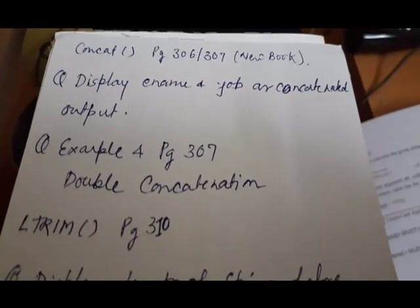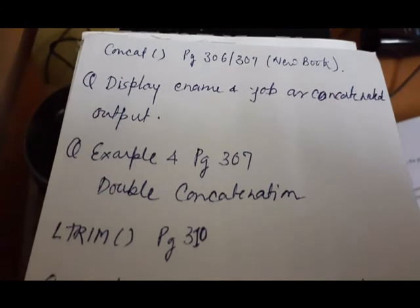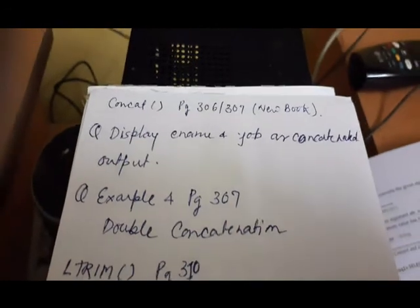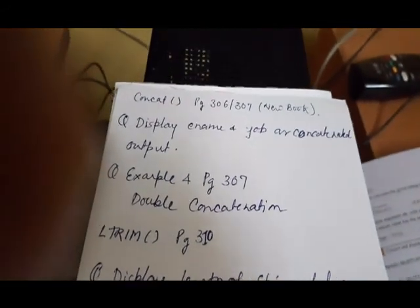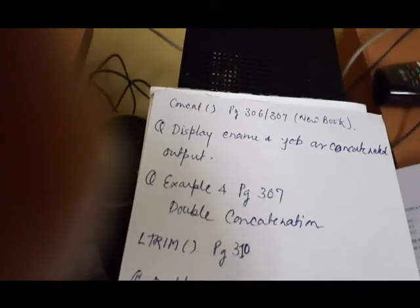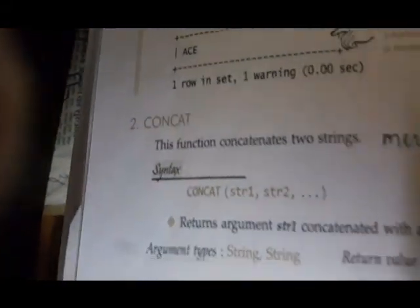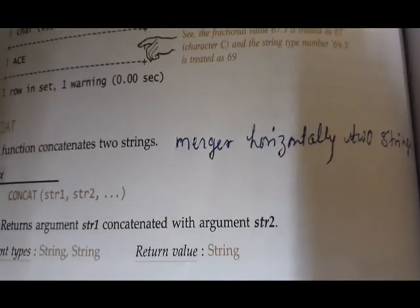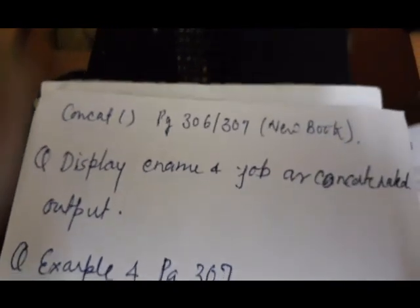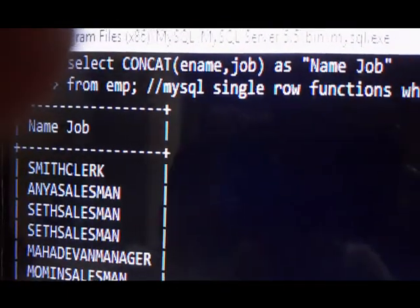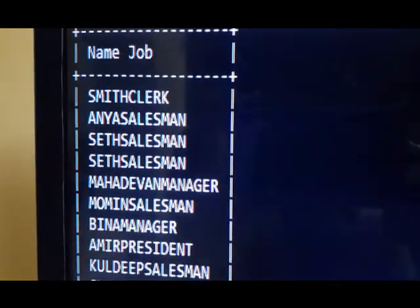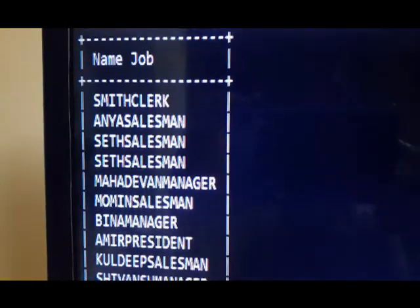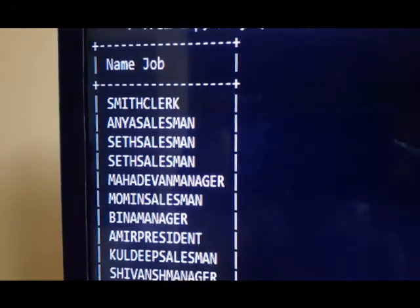Additional functions I will be teaching now. CONCAT function — page 306-307 — you will be getting this function. The question is: display ename and job as concatenated output. Concatenation means merging two strings. The answer is: SELECT CONCAT(ename, job) AS name_job FROM emp. You can see Smith and Clerk are merged horizontally.